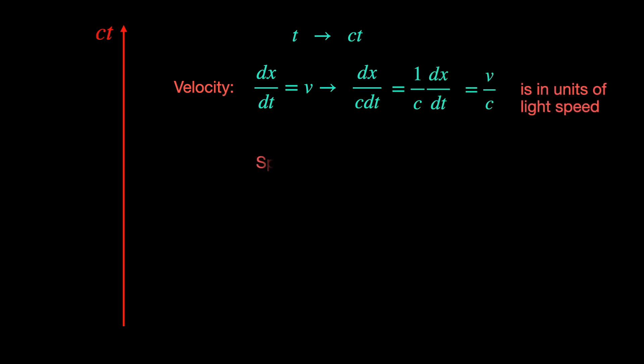Here is how. We scale our time axis from t to ct so velocity v which is dx dt becomes dx by c dt or v by c that is in units of light speed. So, speed of a photon should be unity.